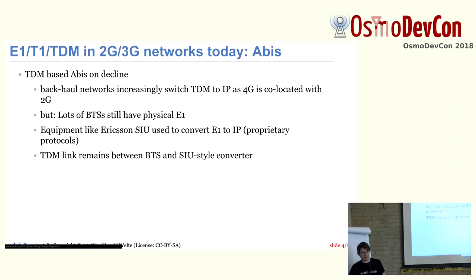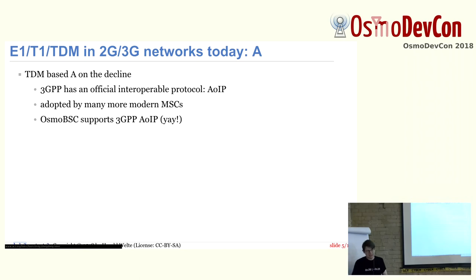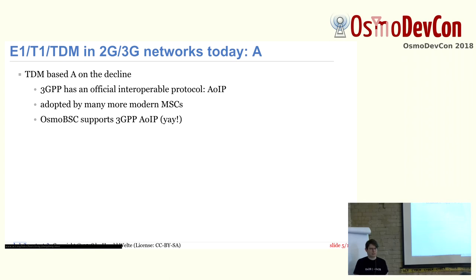You basically have an E1 link of one meter or half a meter between two units at your BTS site and then you have IP — that's what ABIS over E1 looks like. On the A interface it's also very much on the decline. I don't even remember how many years ago we last received a request for a physical E1 A interface in the Osmocom stack. 3GPP introduced A over IP as an official standard, and modern MSCs from Huawei or Ericsson implement an A over IP interface. OsmoBSC now supports this, and independent community members have done interop tests with a Huawei MSC with apparent success.